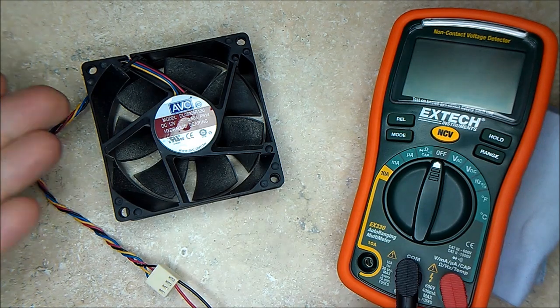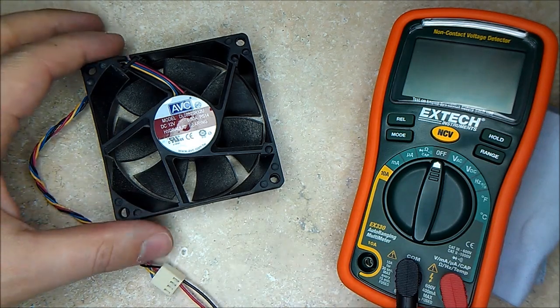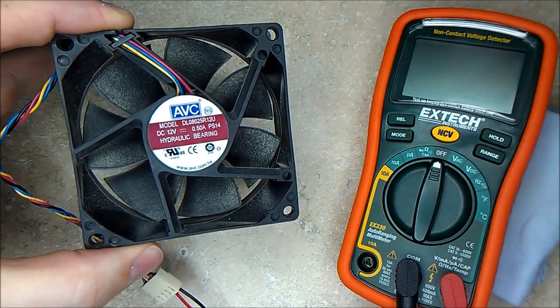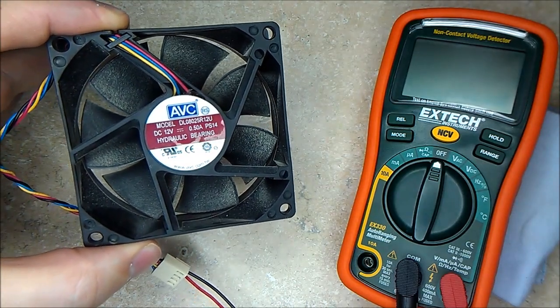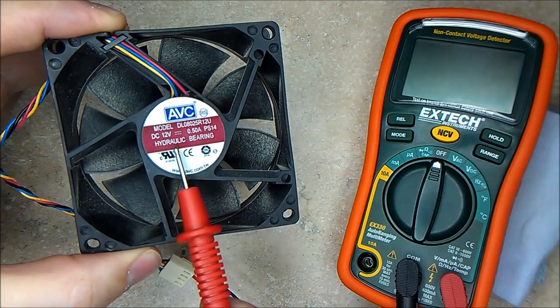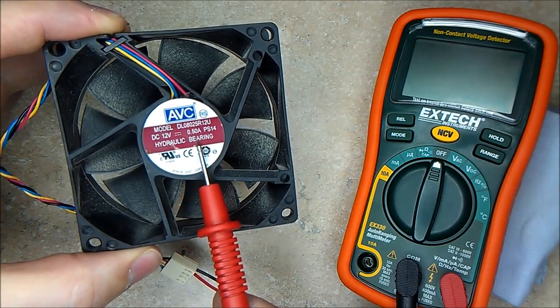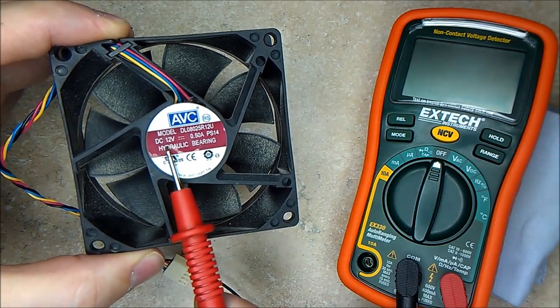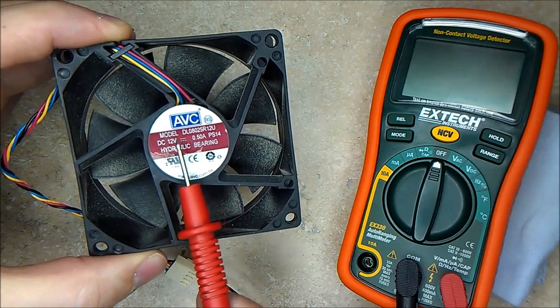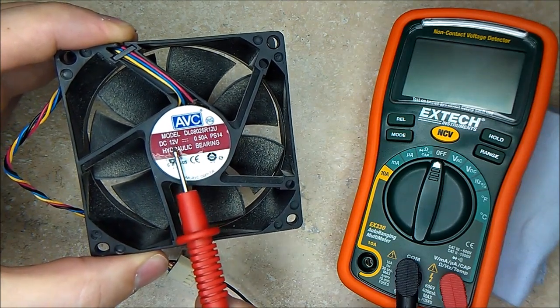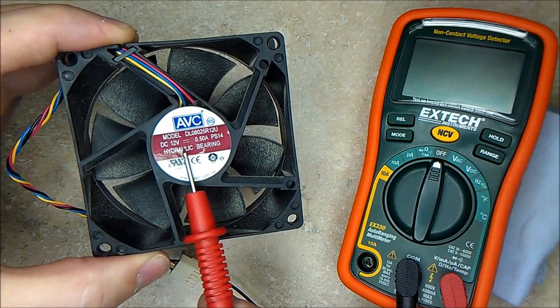In this case we have a fan that reads 12 volts 0.5 amps. Even though it says 12 volts, you can make one of these run with 4 volts just for testing purposes.